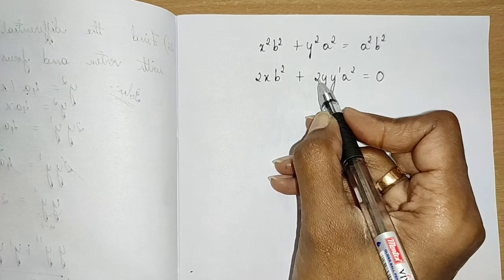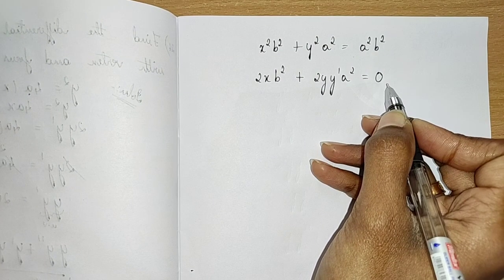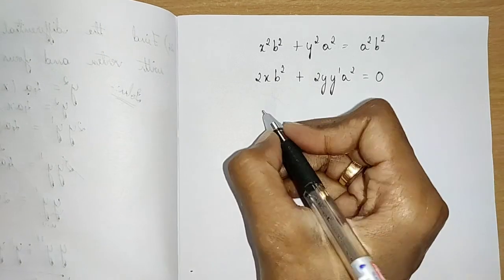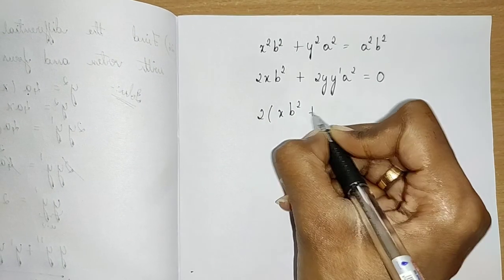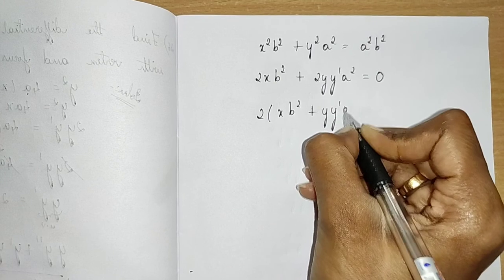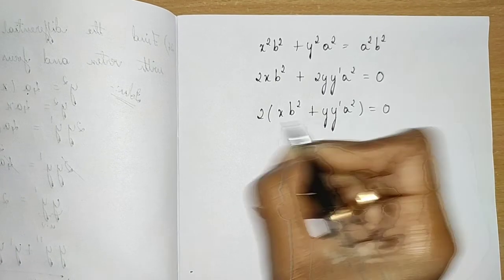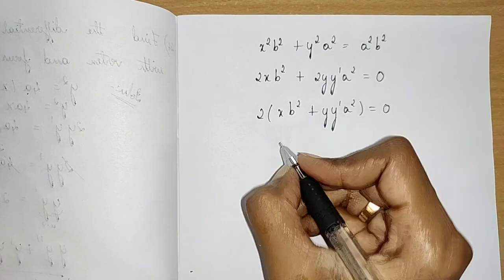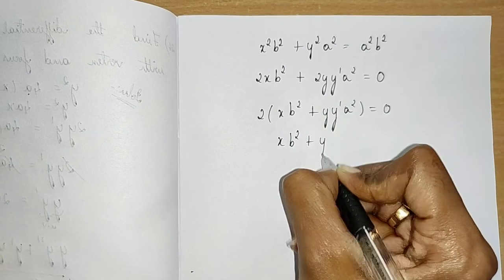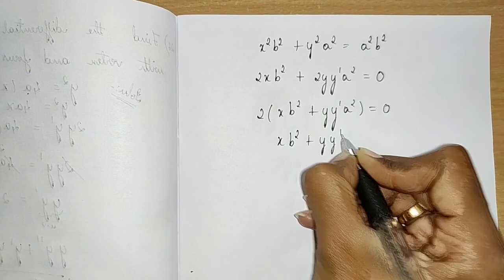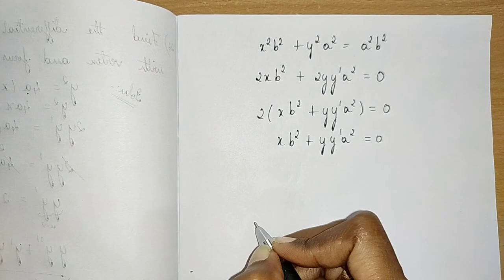Taking 2 common and cancelling, we have: x·b² + y·y'·a² = 0.